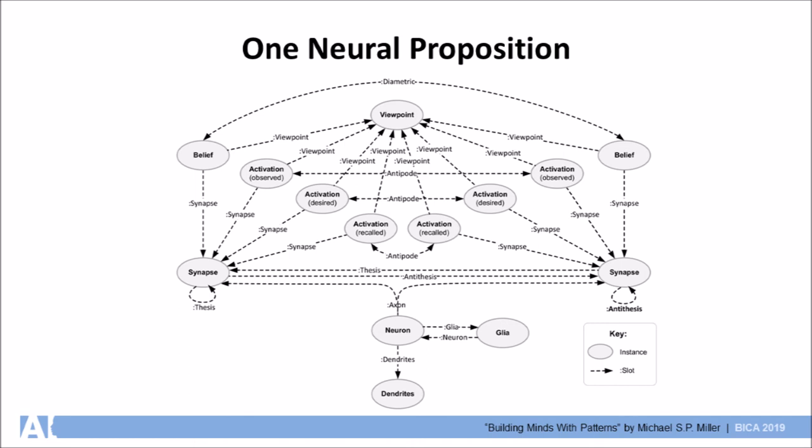The body of the neuron is connected to a glia cell. The axon of the neuron is bifurcated and leads to synapses which create a dualist reification of the neuron using a thesis synapse to represent the neuron and an antithesis synapse to represent the logical opposite.